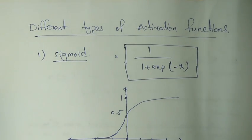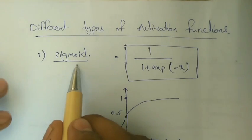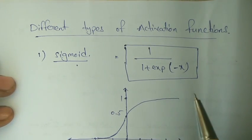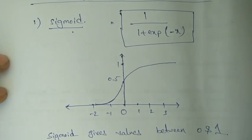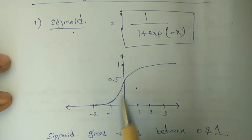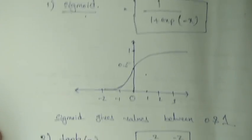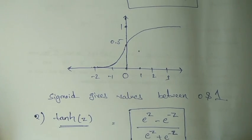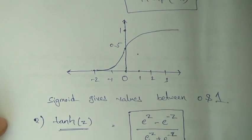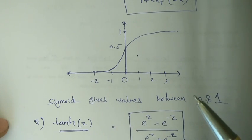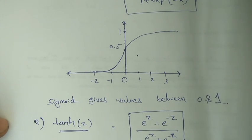There are many different types of functions. We will see some of them. Firstly, the sigmoid function — it is a majorly used function. The sigmoid function is 1 by 1 plus e power minus x. The output of the sigmoid function lies between 0 and 1. This is the curve showing the sigmoid function — the output values are between 0 and 1. When we apply this sigmoid function to our neuron, the output value we get is between 0 and 1, and it passes to the next neuron.